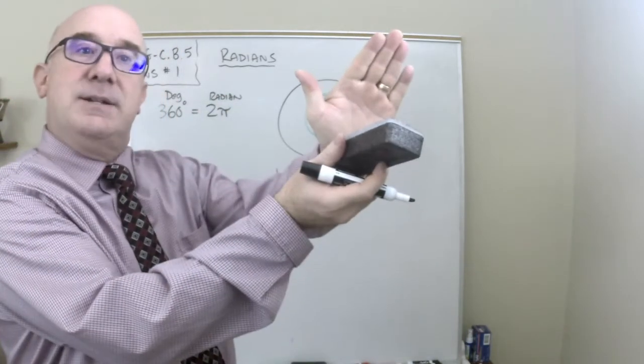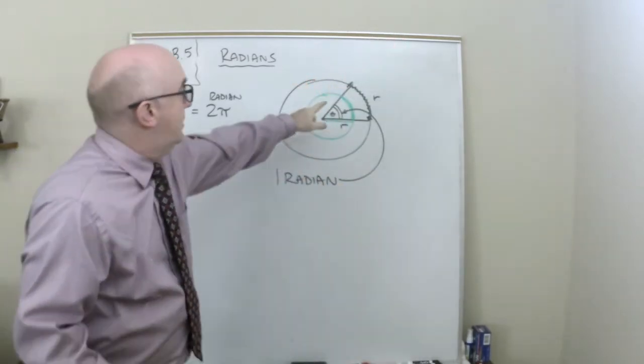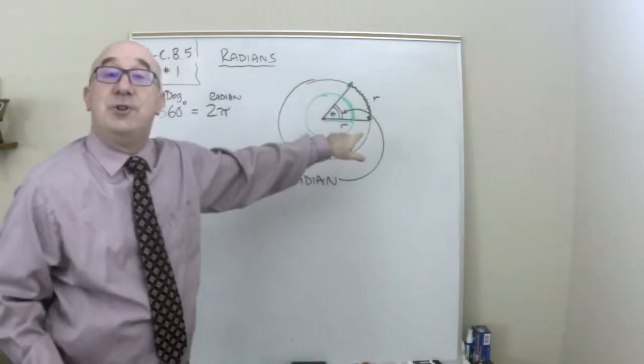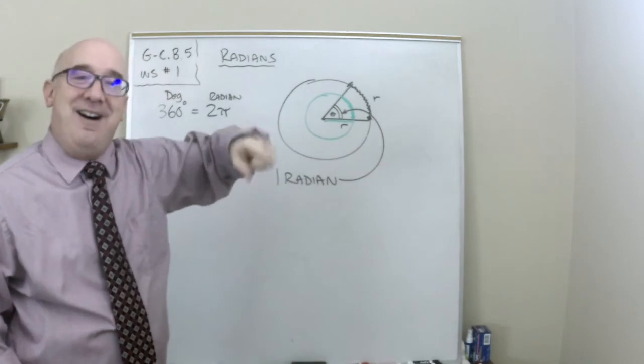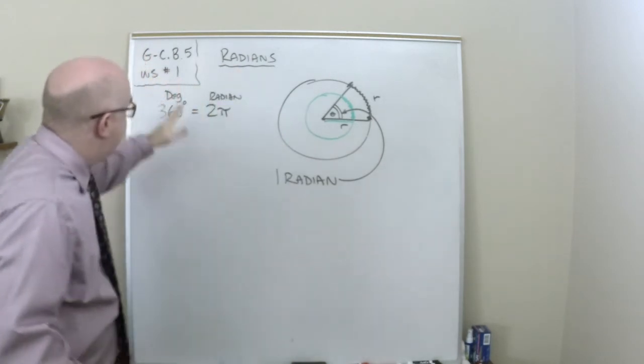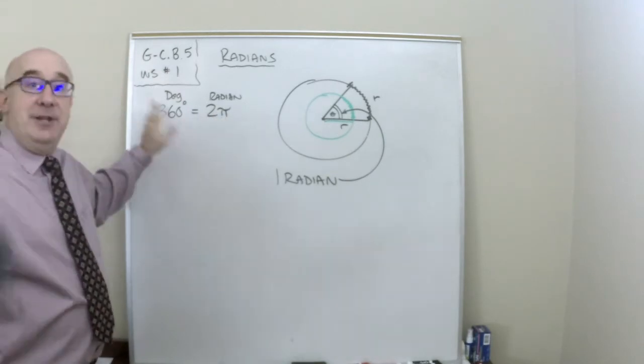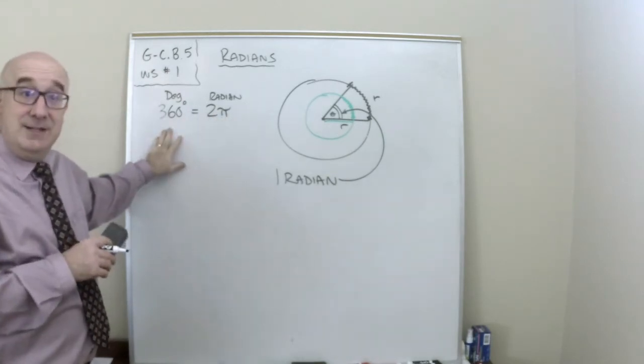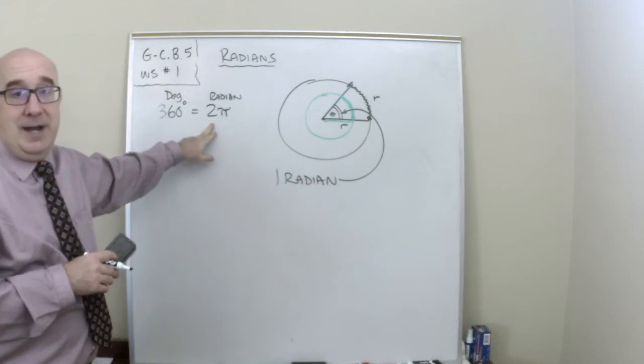Because if we fit one radius like this, how many can I fit in one full circle? Remember, two pi radians, two pi r. This is a conversion from the old-style degrees to the new-style radians.